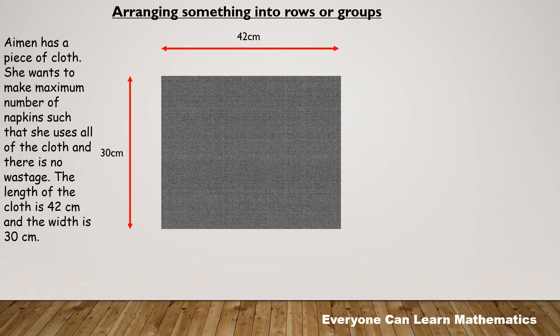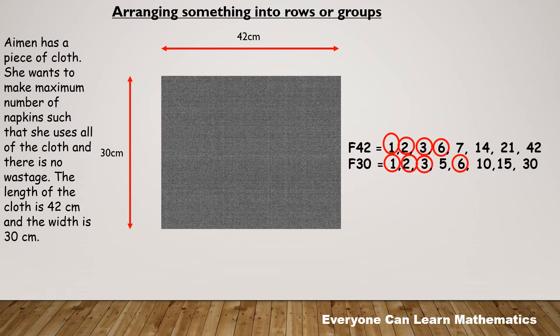Here we need to find what the maximum length or width of the napkins should be, and the condition is that Eamon needs to use the full piece of cloth. The word maximum indicates that we need to find the highest number that is shared by 42 and 30 both. That means we need to find the highest common factor of 42 and 30. Therefore, we list down all the factors of 42 and 30 and circle the common factors. By looking at the common factors, we can see six is the highest number that can be taken as highest common factor. The length and width of the napkins should be six centimeters so that there should be no wastage of the cloth.